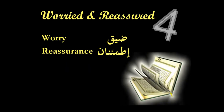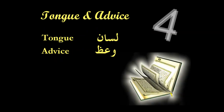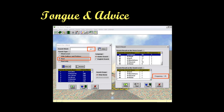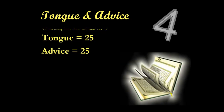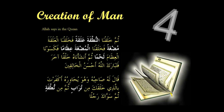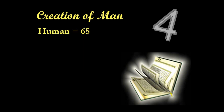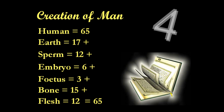There are some other examples which are easy to test. For example, daiq or worry, and reassurance — ma'naan — you can see 13 and 13. Tongue and advice: 25 and 25. And if you search for human — insan — and search for all of the component parts as described in the Qur'an, as mentioned in two specific verses, you can see that the human occurs 65 times, and all of the component parts added together total up to 65. Again, this is something that can be retested.